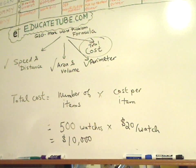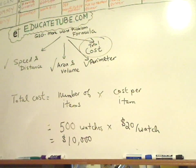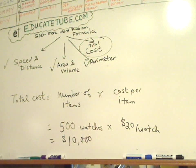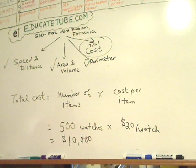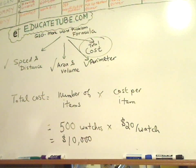So if you decided to sell watches in your store, and you bought 500 of them — and you thought that was a great deal — you bought them for $20 each, and you have 500 watches in inventory, you know you have to come out with $10,000.